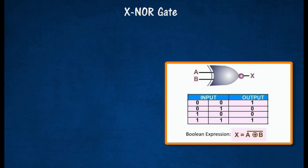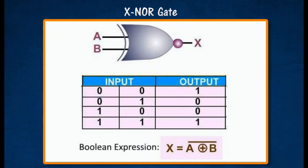The exclusive NOT OR gate is a combination exclusive OR gate followed by an inverter. Its output is true if the inputs are the same, and false if the inputs are different.